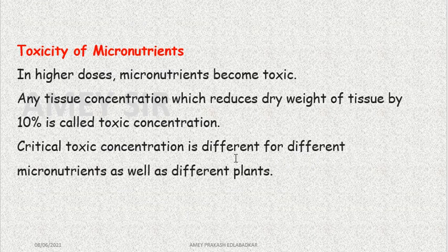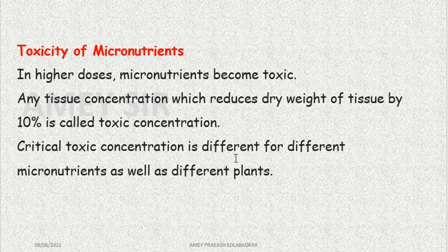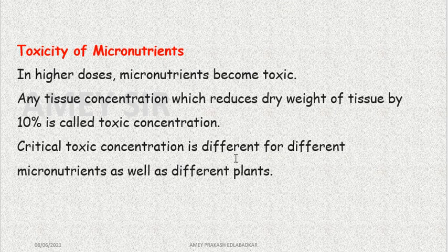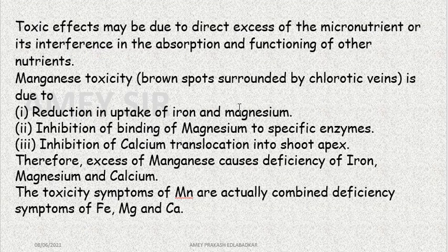Sometimes the toxicity of micronutrients also shows effects on plants. If plants receive more minerals than needed, it can be toxic for them. Any tissue concentration — meaning the concentration of that particular element in that plant tissue — if it increases to the point where it reduces dry weight by more than 10%, then it should be called toxic concentration. This critical toxic concentration is different for every plant and every crop.